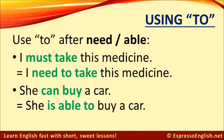You should use 'to' after the words 'need' and 'able'. Another way to say 'I must take this medicine' is 'I need to take this medicine' — they mean the same thing. Another way to say 'she can buy a car' is 'she is able to buy a car'. The two sentences are equivalent.